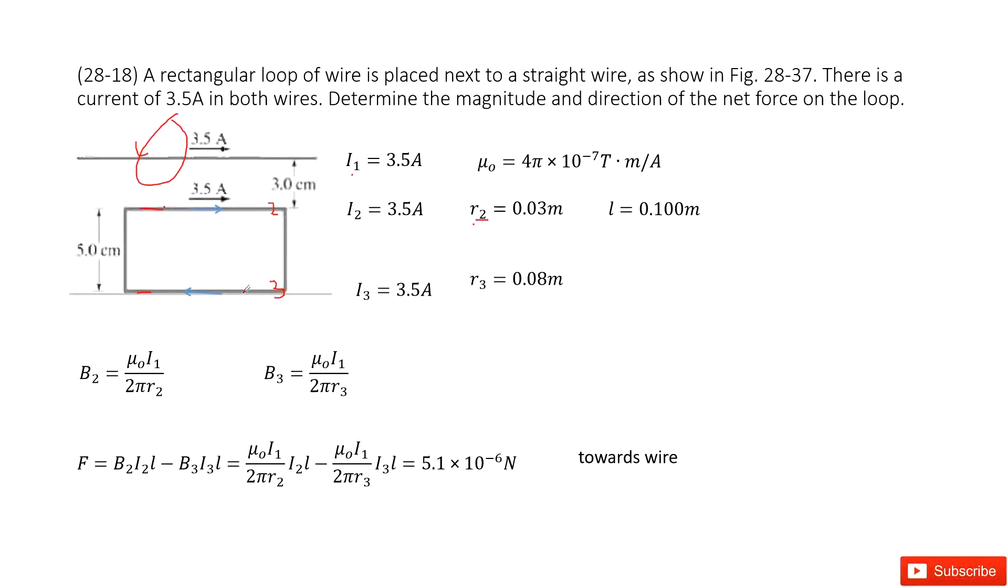And then next, we look at point 3. We need to find B3, mu dot I1 divided by 2 pi R3. R3 is 3 cm plus 5 cm, which is 8 cm.